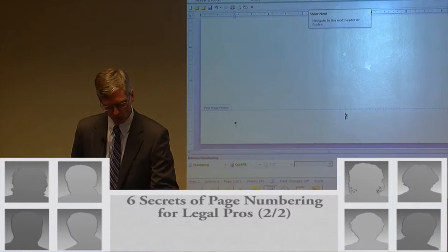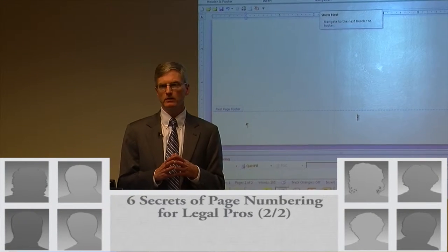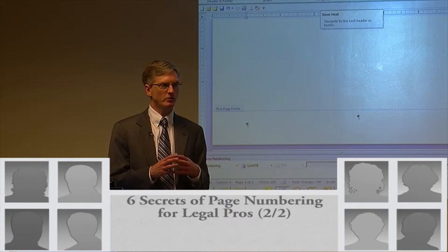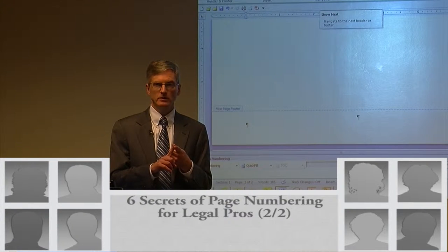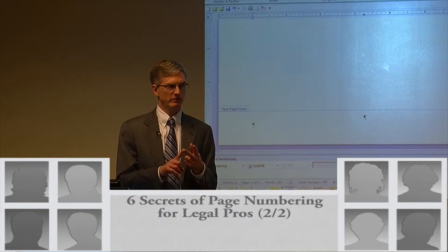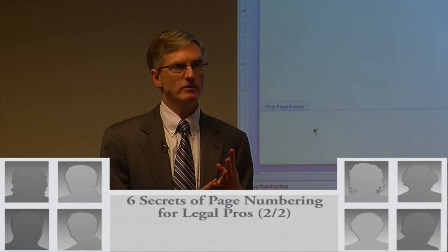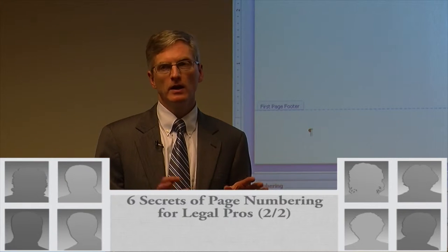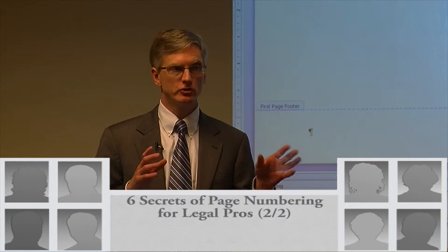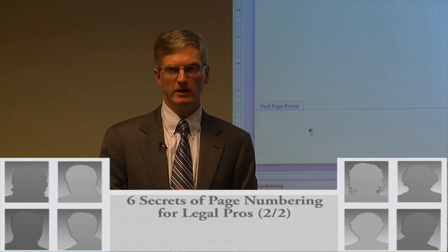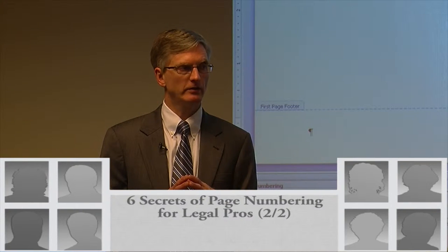What are the steps for complex page numbering? The document we're going to have has four sections: a cover page, a section with table of contents and table of authorities, the body of the document, and then an appendix. For this part, I really find it works better if you just follow me and don't try to do it yourself, because there are just too many steps involved.